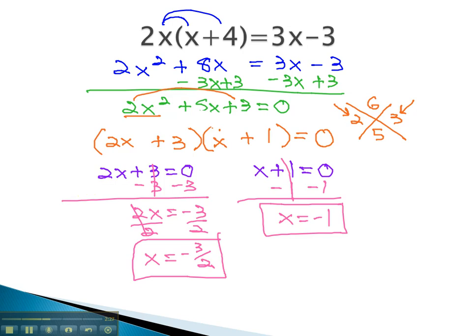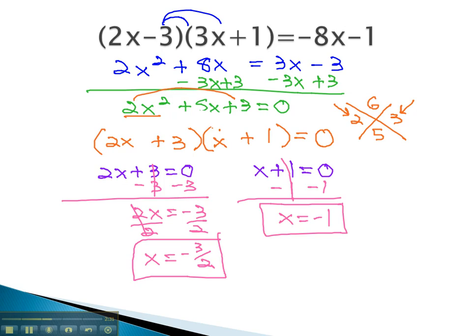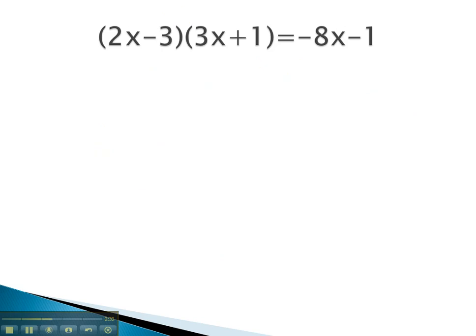Let's see if we can solve another problem where we do just that. In this problem, we see on the left side it's factored, but it's not equal to zero. For this reason, we must multiply it out to see what we have.